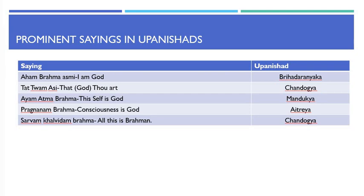The Upanishads constitute an important body of knowledge. The German philosopher Arthur Schopenhauer was deeply impressed by the Upanishads and called it 'the most profitable and elevating reading which is possible in the world.' He found his own philosophy in accordance with the Upanishads, which taught that the individual is a manifestation of the one basis of reality. Some prominent sayings include: Aham Brahma Asmi in the Brihadaranyaka Upanishad — 'I am Brahman'; Tat Tvam Asi in the Chandogya — 'That Thou Art'; Ayam Atma Brahma in the Mandukya — 'This Self is Brahman'; Prajnanam Brahma in the Aitreya — 'Consciousness is Brahman'; and Sarvam Khalvidam Brahma in the Chandogya — 'All this is Brahman.'